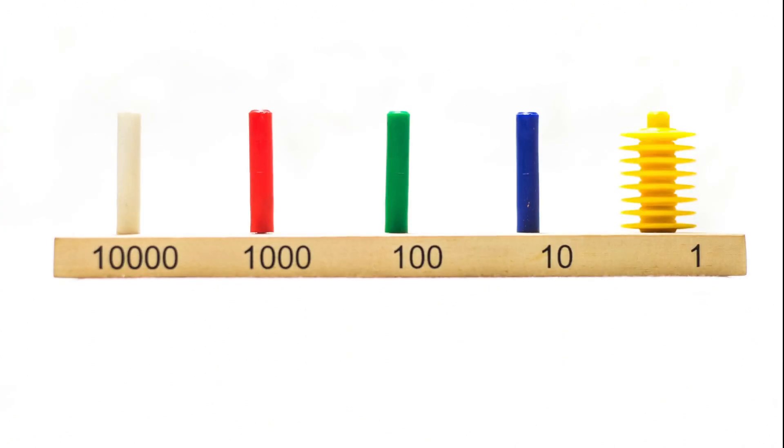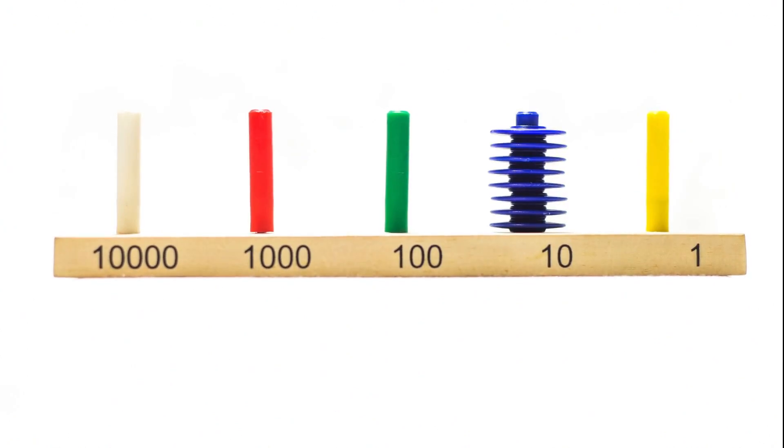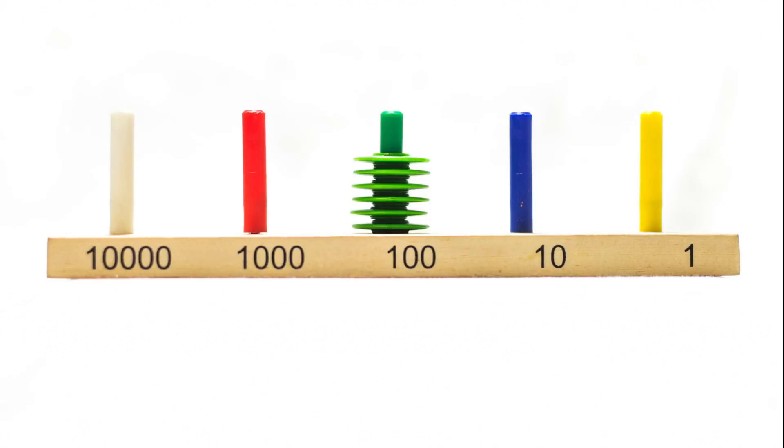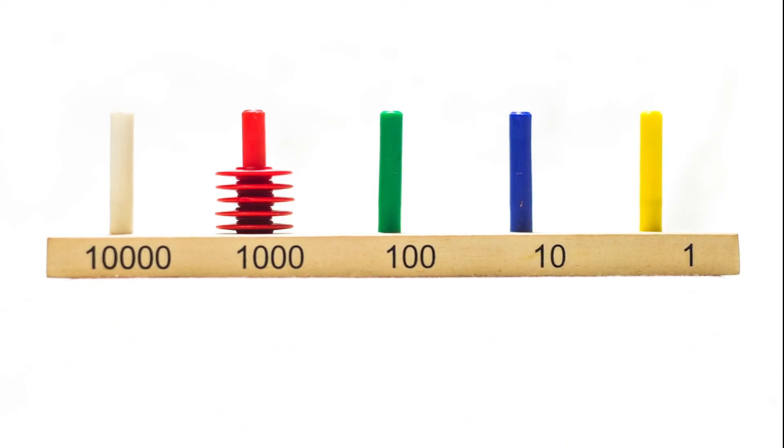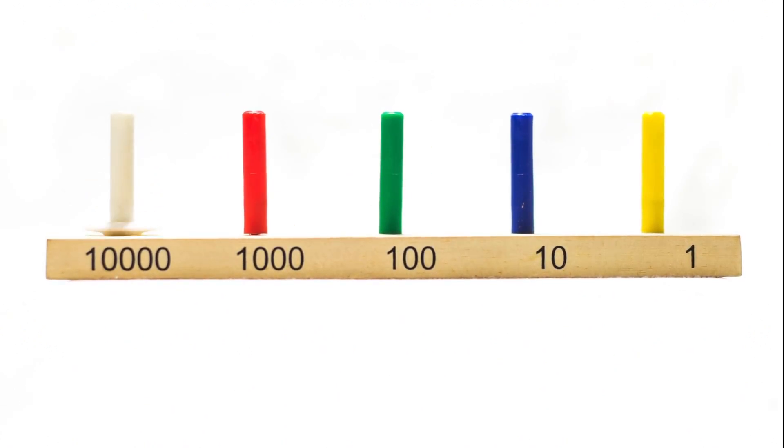Yellow beads denote units. Blue beads denote tens. Green beads denote hundreds. Red beads denote thousands. White denote tens thousands.